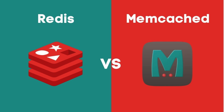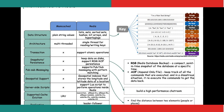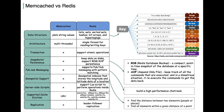Redis and Memcached are both popular in-memory caching systems, but they have some differences that make them suitable for different use cases. Here's a brief comparison. Memcached is known for its simplicity — it stores key-value pairs in memory, and its design is straightforward, focusing on providing high-performance caching.